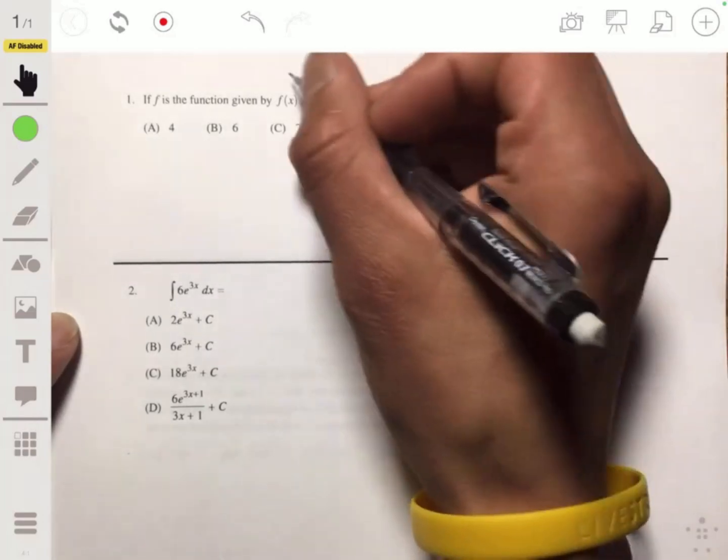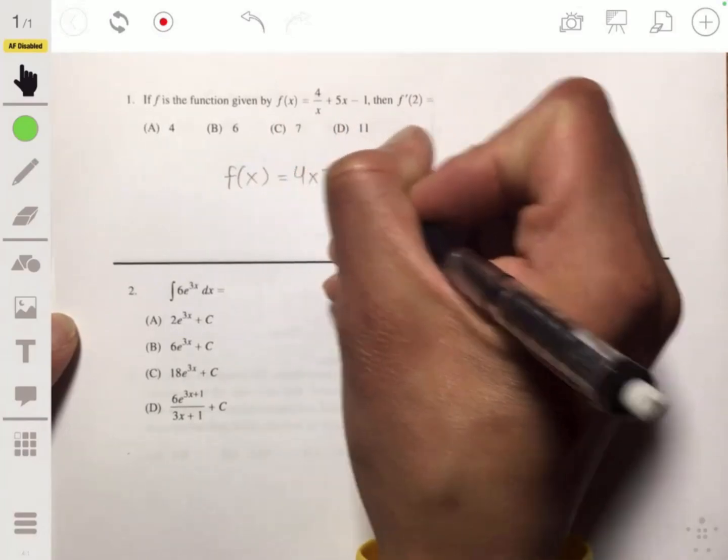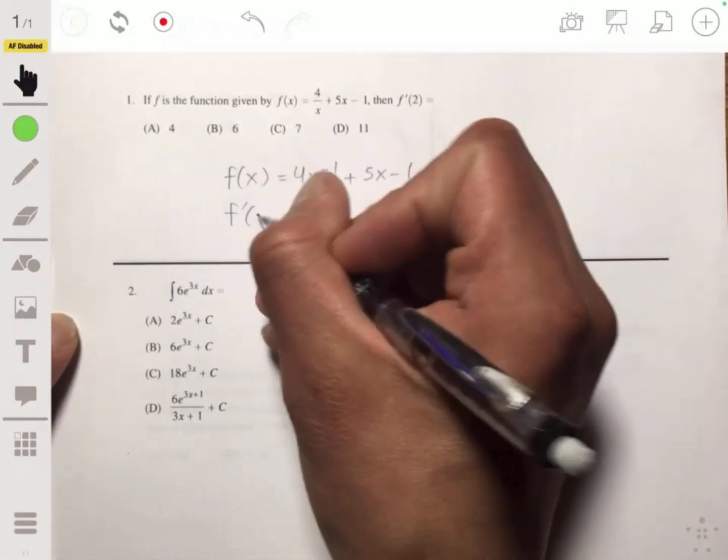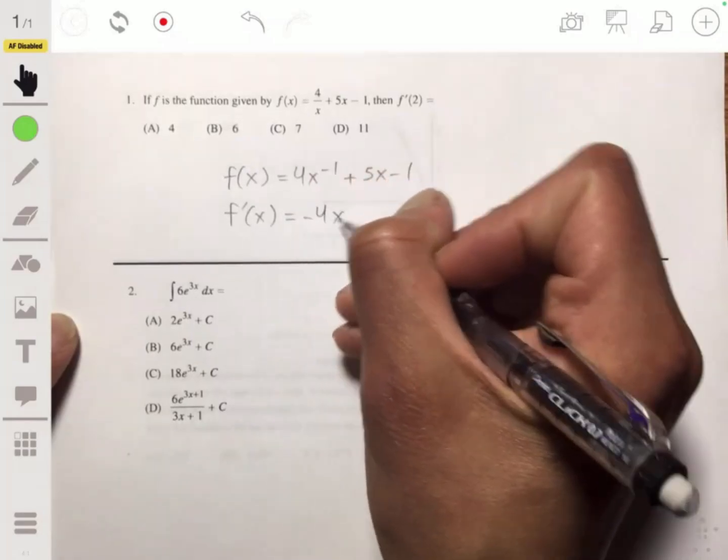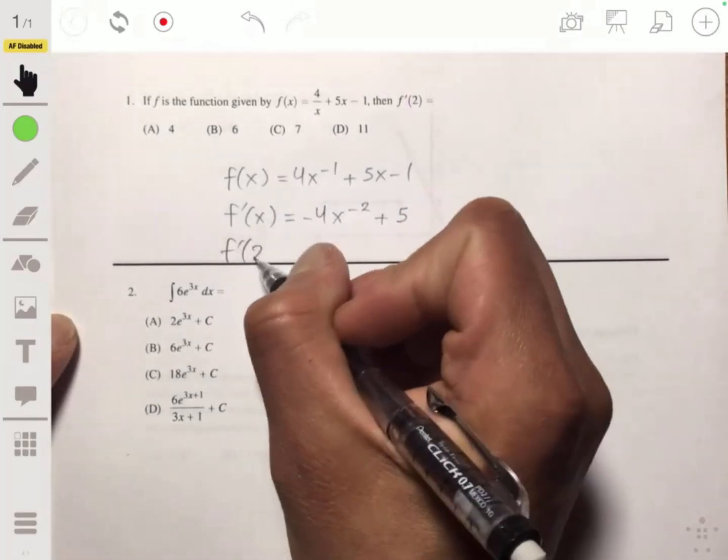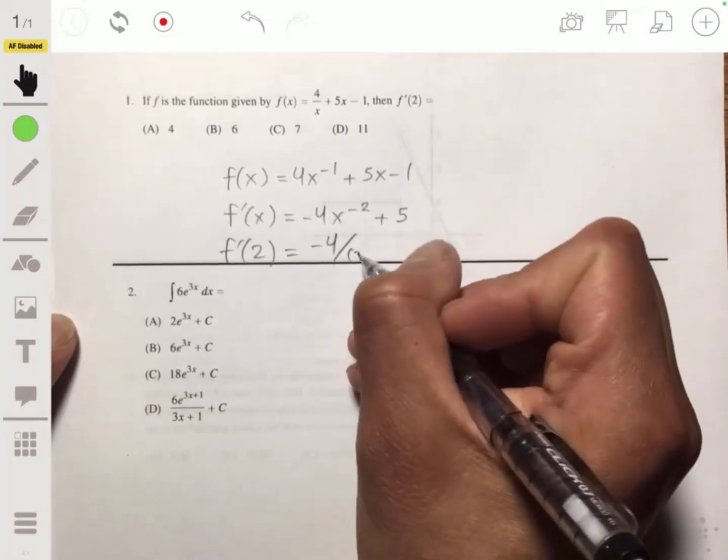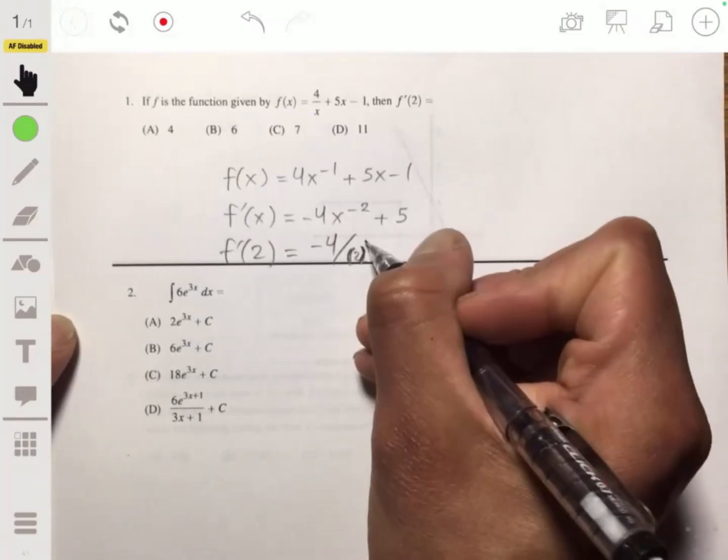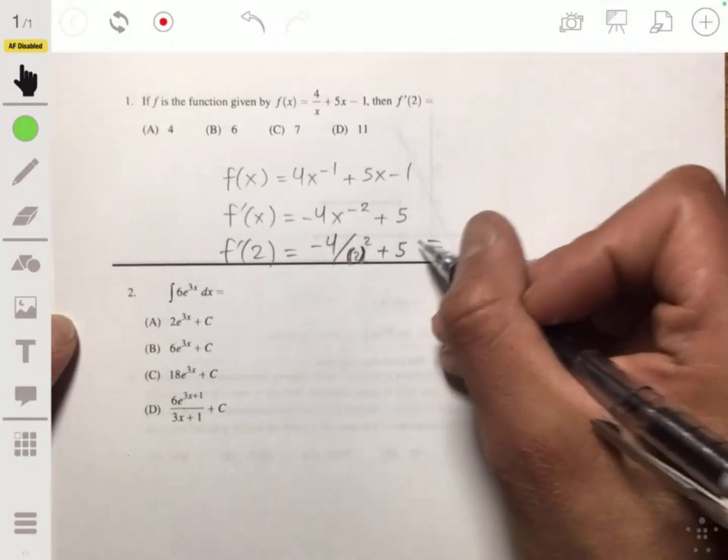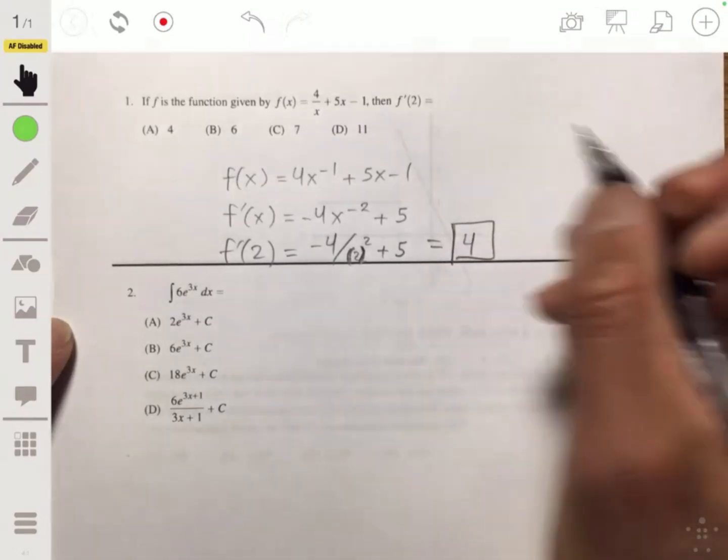So let's use the power rule. Let's rewrite f(x) as 4x^(-1) + 5x - 1, and then f'(x) will be -4x^(-2) + 5. Then f'(2) will just be -4/2^2 + 5, so -4/4, so -1 + 5, which will give us 4. And so the answer will be A.